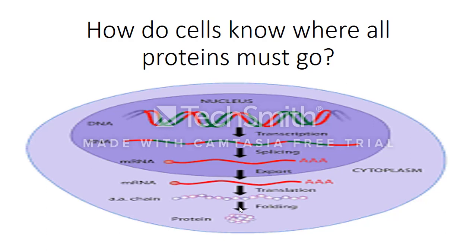First, some terms we should know. The first one is targeting — directing a protein to a certain location, such as the mitochondria or the endoplasmic reticulum. In order to do that, there are specific signals needed so that the cell knows where the protein is supposed to go. Another vocabulary term is sorting — proteins that have been targeted to the ER and then sorted from there.